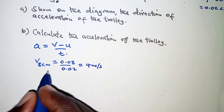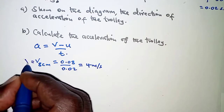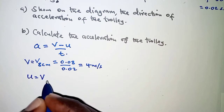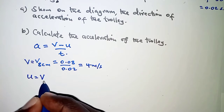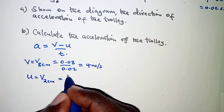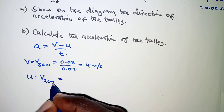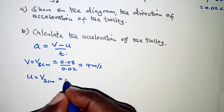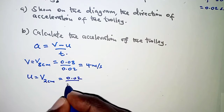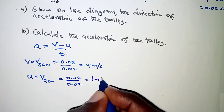We also have the initial velocity U. U is the velocity during the first 2 centimeters interval, so that is displacement over time taken. The displacement is 2 centimeters, expressed in SI units as 0.02 meters, divided by the time taken 0.02 seconds, and that gives us 1 meter per second.